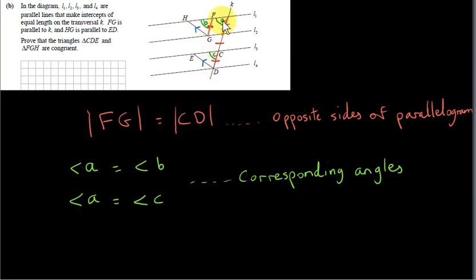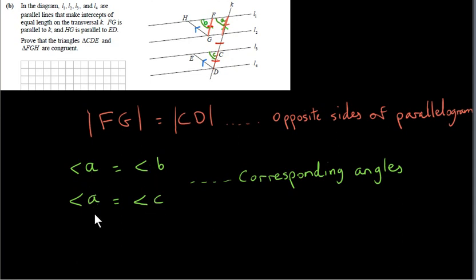Angle A and angle C are also corresponding angles. We have the line L1 and L3, which are parallel, with this line cutting through them, forming a pair of corresponding angles A and C, and corresponding angles are equal. So angle A equals angle C, but these two are equal to the same thing, so angle B must equal angle C.